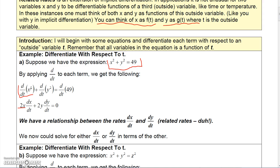After we get 2x, we multiply by the derivative of x with respect to t. Similarly, for y², since we're differentiating with respect to t and y is a function of t, we get 2y times dy/dt, again applying the chain rule. The derivative of the constant 49, regardless of the variable used for differentiation, is always zero.